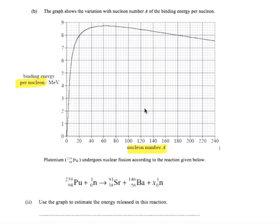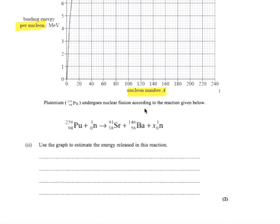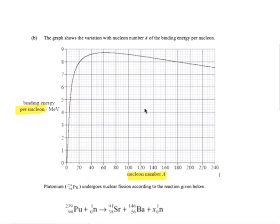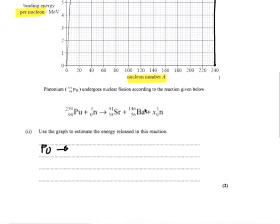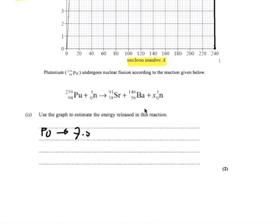What we want to do is use the chart to get the binding energies of plutonium, strontium, and barium. Starting with plutonium-239, we read the graph at 239 and get about 7.5 MeV per nucleon. With 239 nucleons, that gives a total binding energy of 1,792 MeV.